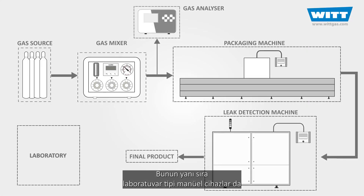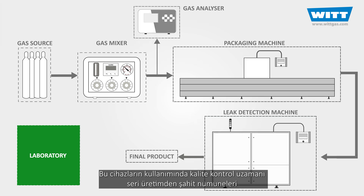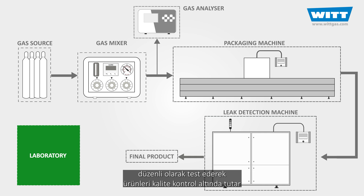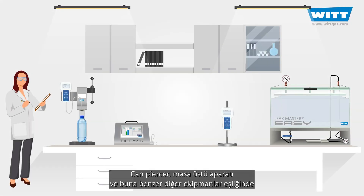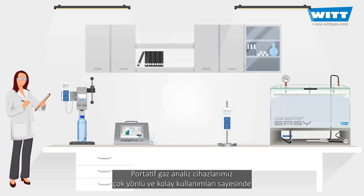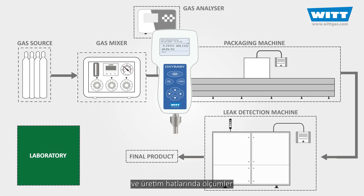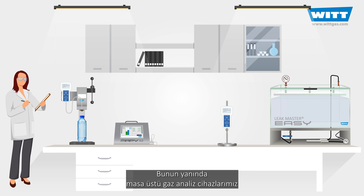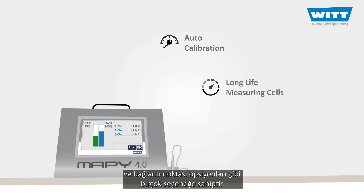In addition to the mentioned equipment in the production line, laboratory testing devices are used as well. Quality control experts perform tests on randomly chosen packages to check the quality and suitability for sale. Along with accessories like can piercers, tabletop or portable gas analyzers can be used for analyzing gas concentration inside different kinds of packages. Portable analyzers are highly versatile and easy to use, suitable for laboratory or production line use. Tabletop analyzers can have additional options like auto calibration, long-life measuring cells, and more communication ports.